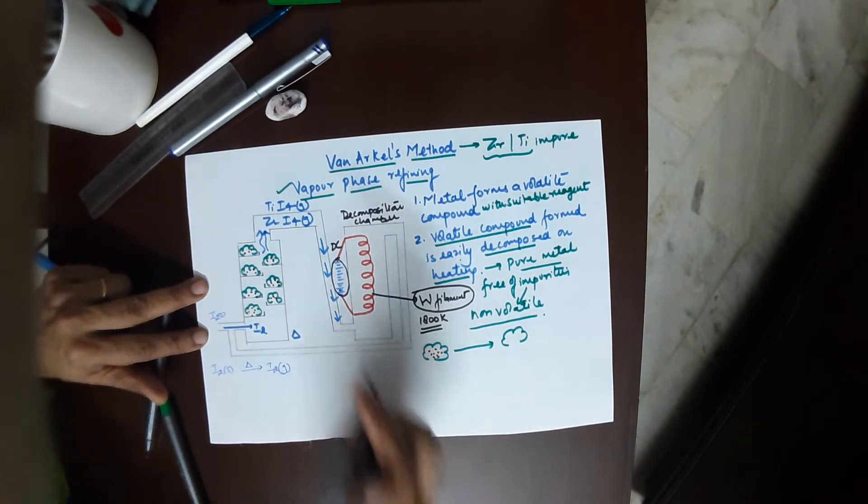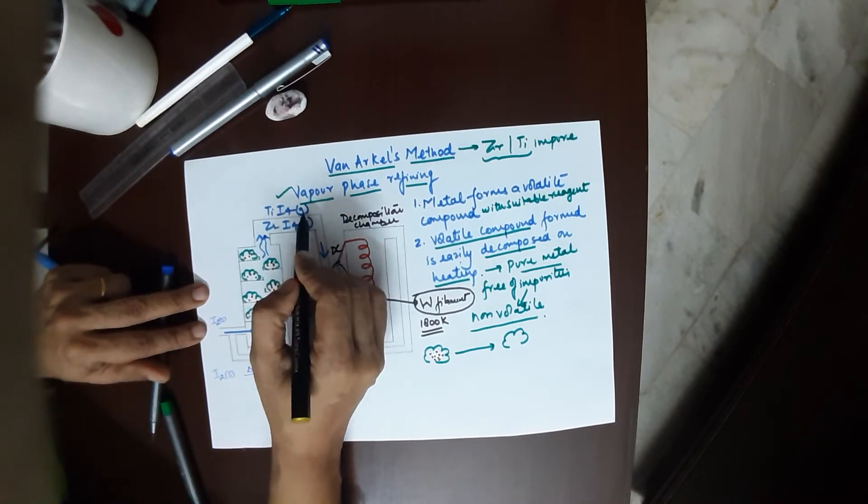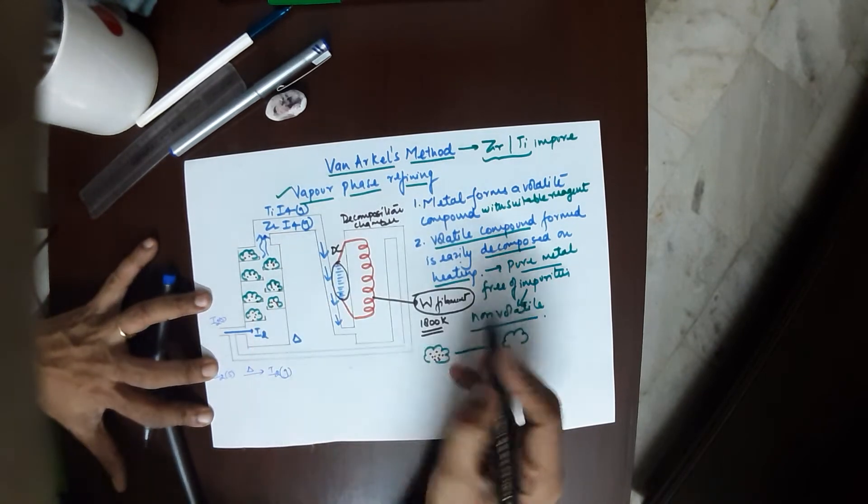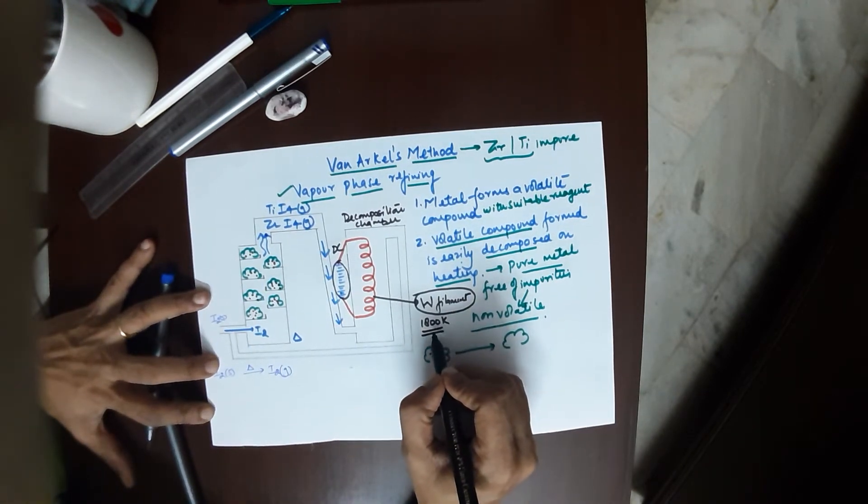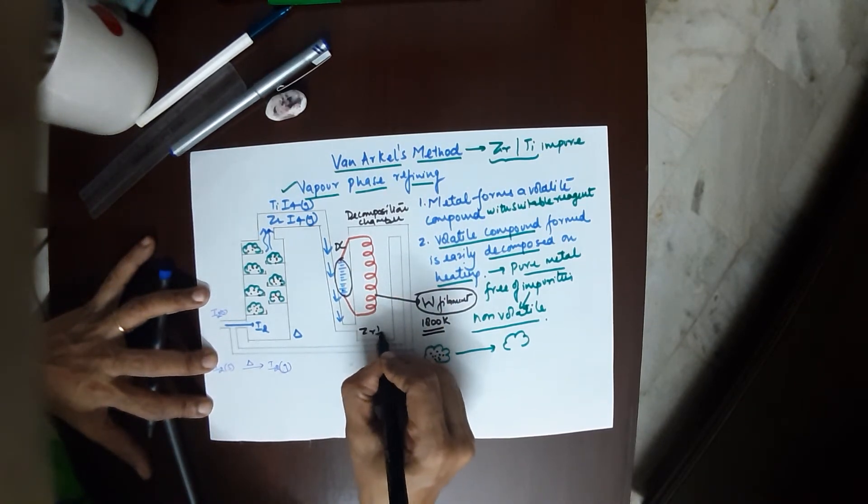You do not need to learn the temperatures; it is just for you to understand the concept. This also means that the compound formed, zirconium tetraiodide or titanium tetraiodide, are comparatively stable and they decompose only at a very high temperature of 1800 K.